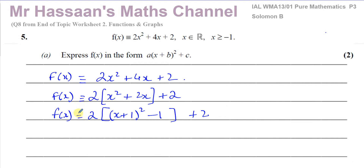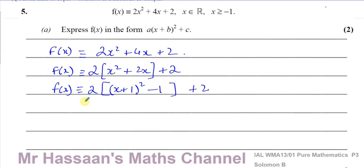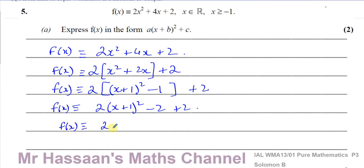All these lines are identical to each other. Now I multiply the 2 through the bracket terms and combine: 2(x + 1)² gives 2 times −1 = −2, then add the outside +2. The −2 and +2 cancel, leaving f(x) = 2(x + 1)² + 0. So c = 0, a = 2, b = 1, though the question only asks us to express it in that form, which we've done. Part A is complete: f(x) = 2(x + 1)².